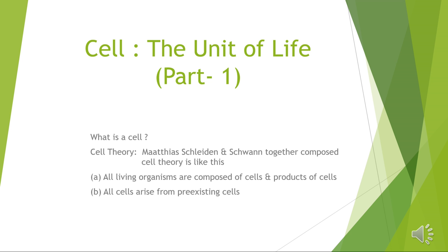All organisms are composed of one or more cells, and new cells develop from pre-existing living cells by division. Organisms formed of single cells, just like amoeba and chlamydomonas, are called unicellular organisms. Organisms consisting of many cells are known as multicellular organisms — men and a tree are examples of multicellular organisms.